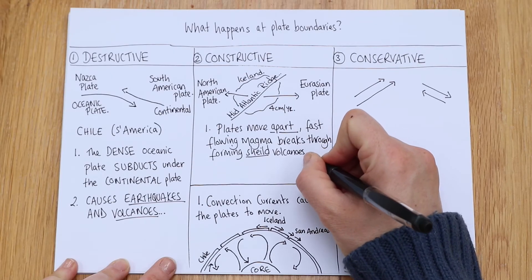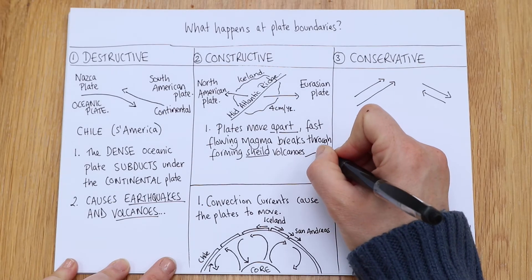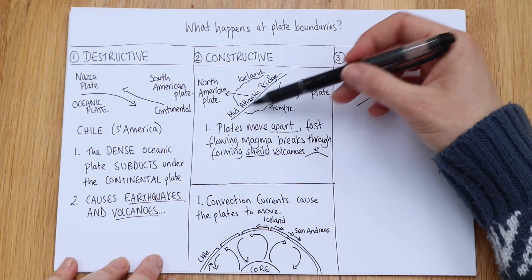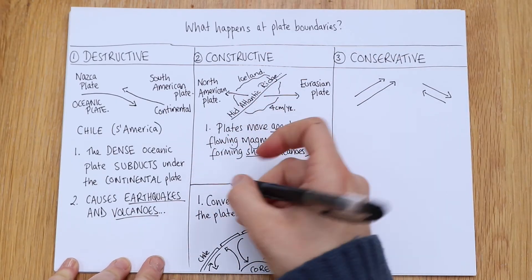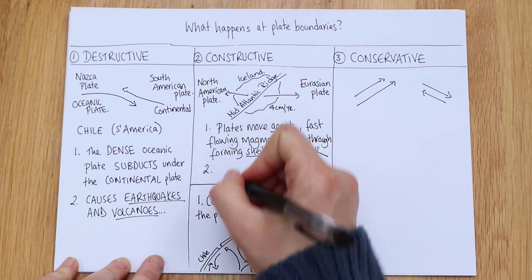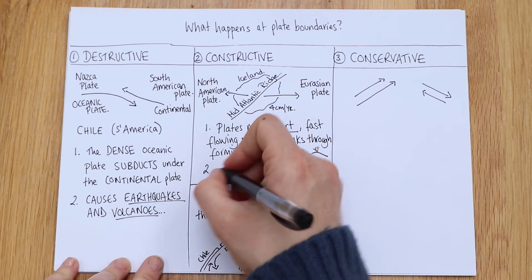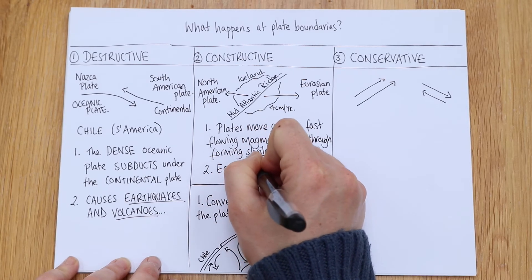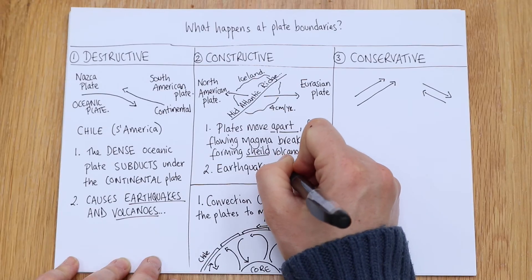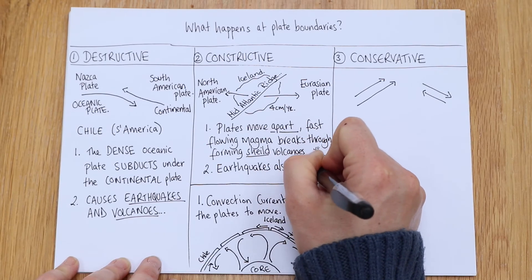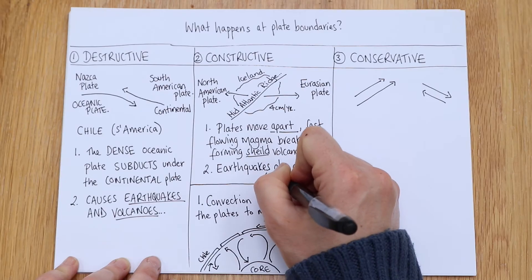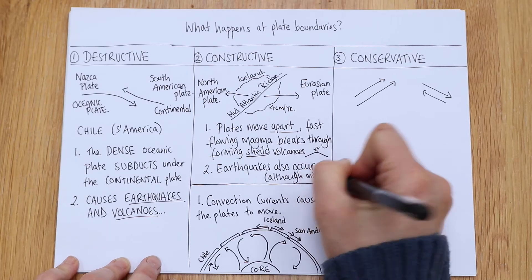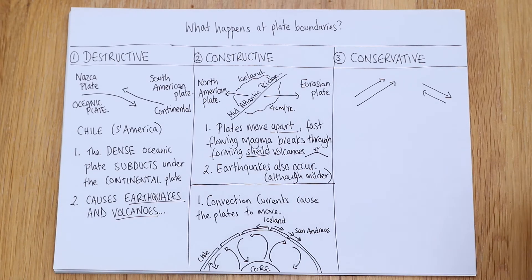Instead of a normal cone-shaped one, they're just sort of like this. This obvious action, it's making volcanoes, that friction as well is also causing earthquakes, but they are milder. So earthquakes also occur, although milder. There we go, so we've got our constructive plate boundary.